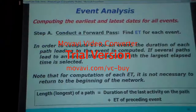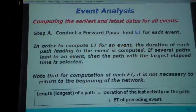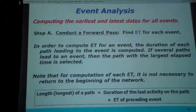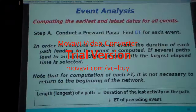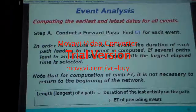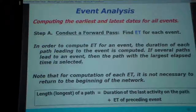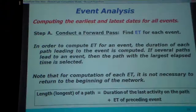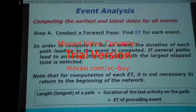So we have to come from this — left to right — take the largest path until you get here. That is the largest. And when you come back to calculate the slack, back to calculate the smallest path. Note that for computation of each early time, it is not necessary to return to the beginning of an event, because it will be calculated from this one to this one, and again like this.